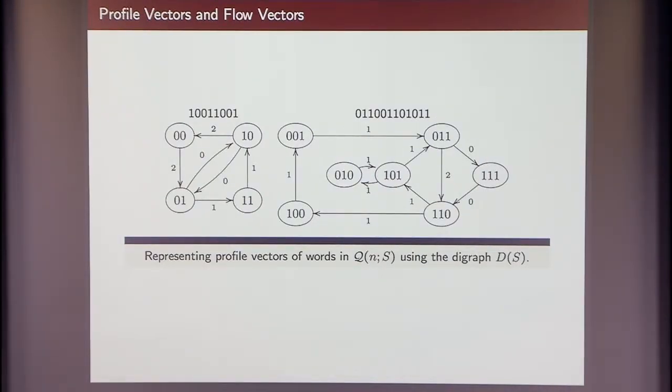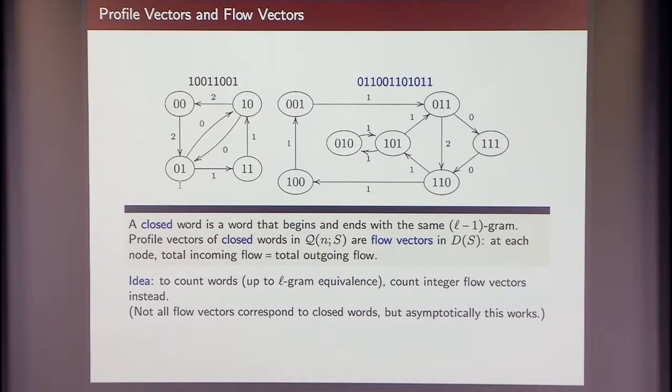And here's an interesting property. If we look at closed words in such, closed words meaning words that begin and start with the same L-gram, so this guy here is a closed word because you start with 0, 1, 1, and you end with 0, 1, 1, and we are dealing with L is equal to 3 here. This guy here is not a closed word because 1, 0 and 0, 1 are not the same sequences. If you deal with closed words, then you can associate that word and walks or flows in this graph with the profile vectors.